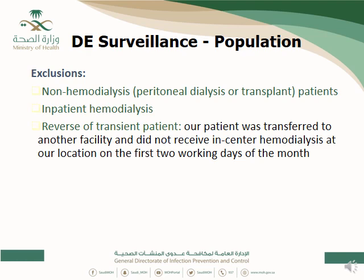The reverse of the transient patient rule: if your patient leaves your city — for example, goes from Riyadh to Jeddah and receives maintenance hemodialysis there for two weeks or a month — they are not included in your denominator or numerator. You include only patients who actually received hemodialysis service in your facility, whether they are regular or transient patients.